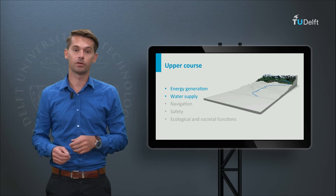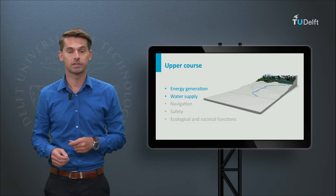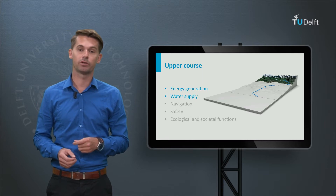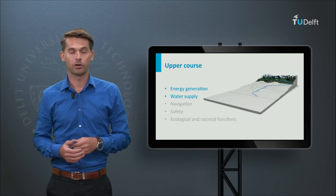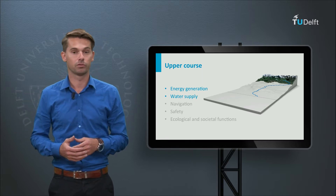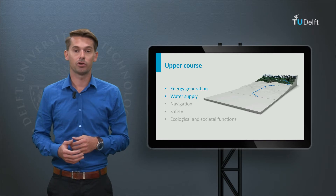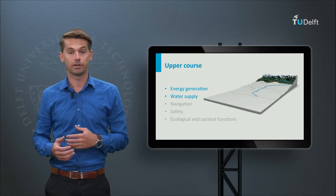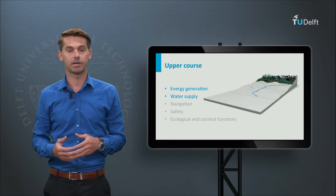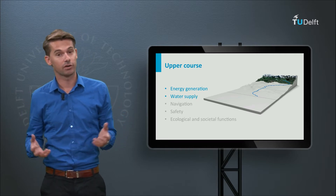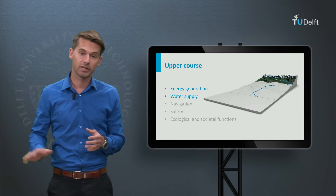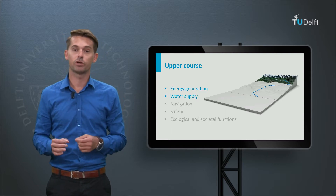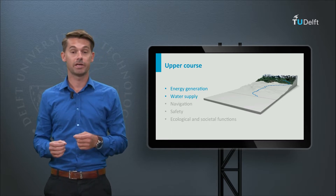The upper course of the river typically lies in mountainous and hilly areas, where the river collects water from rainfall, runoff, and snowmelt. Due to the rapid runoff of heavy rainfalls, flash floods can occur for people that live in these areas, sometimes in combination with landslides. For these areas, a good flood warning system is important.